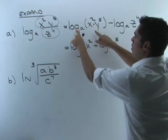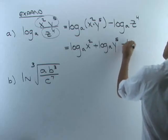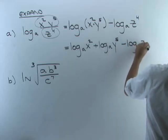Remember, multiplication inside of one log becomes addition of two logs. Then I still have minus log base a of z to the fourth.